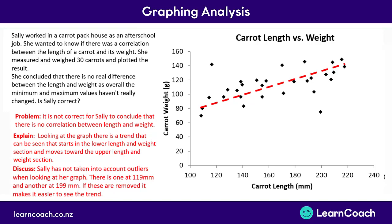Finally, we need to discuss ways to improve Sally's conclusion. Sally has not taken into account two outliers, which are affecting her judgement. She needs to know that they are just outliers and don't fit the trend of the graph. There is an outlier at 119mm and another at about 199mm. If you took these two out, it would be easier for Sally to see the trend line.